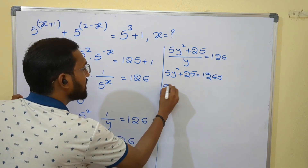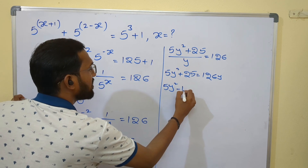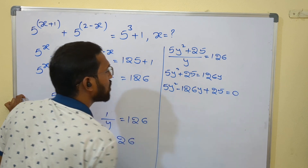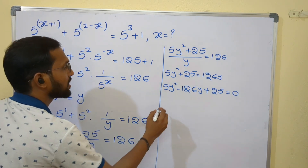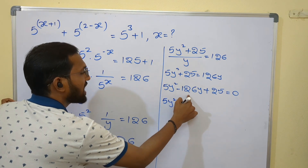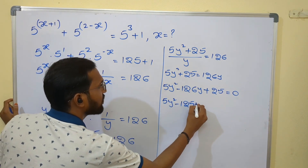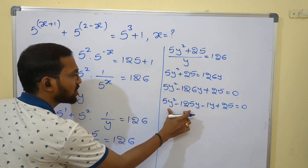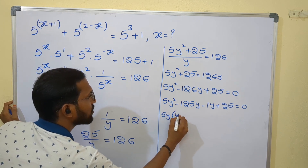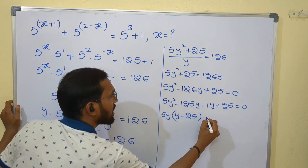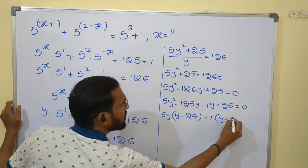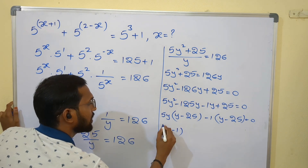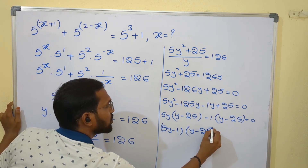Bring everything to the left side: 5y² - 126y + 25 = 0. Now splitting the middle term into two terms: 5y² - 125y - 1y + 25 = 0. Taking 5y common from the first two terms gives (y - 25), and taking -1 common from the last two terms also gives (y - 25). So: (5y - 1)(y - 25) = 0.